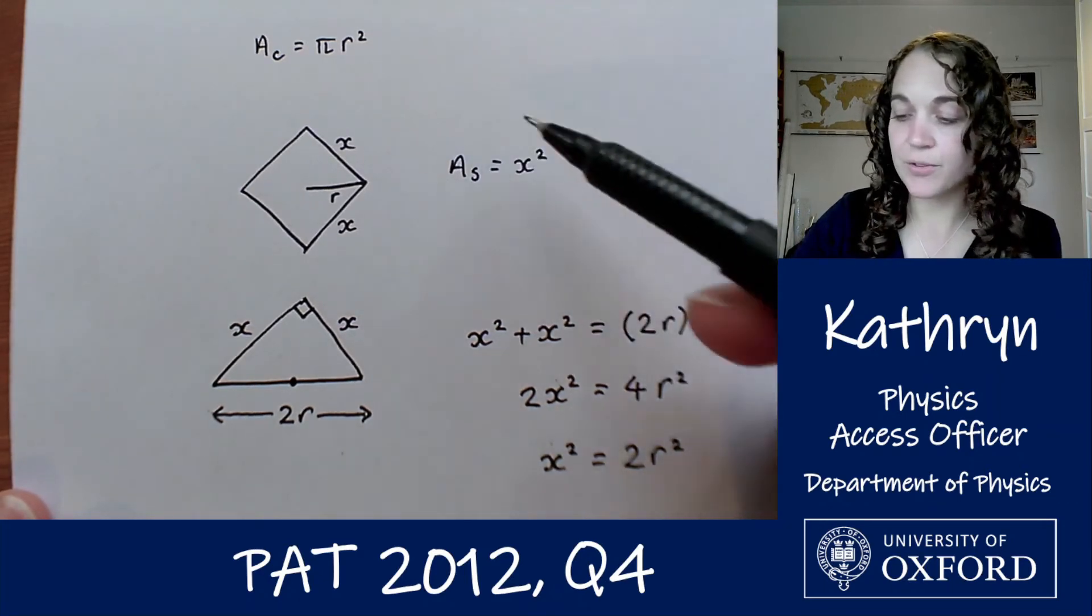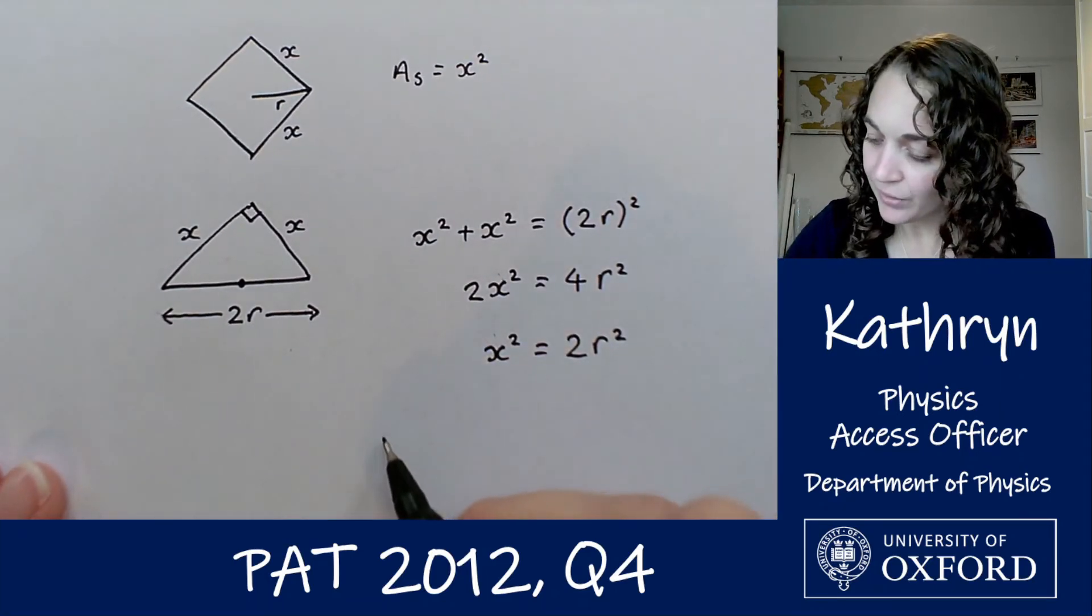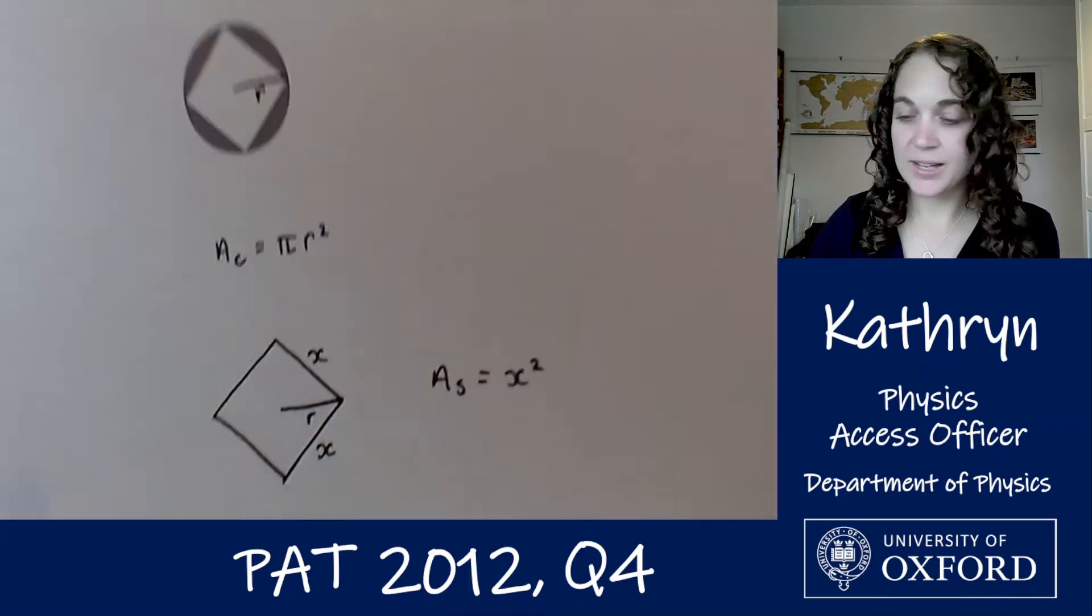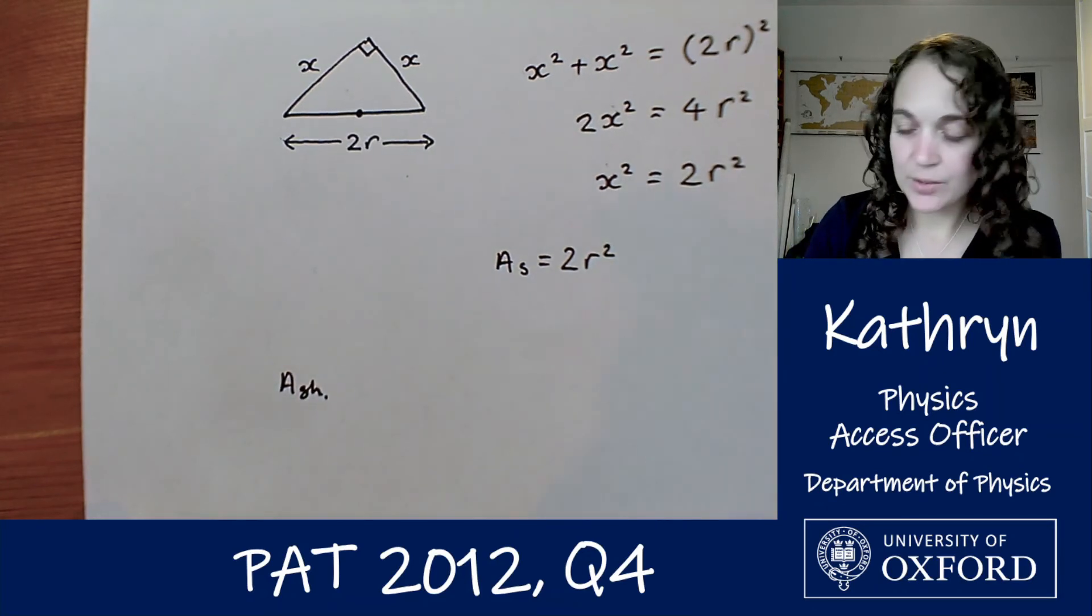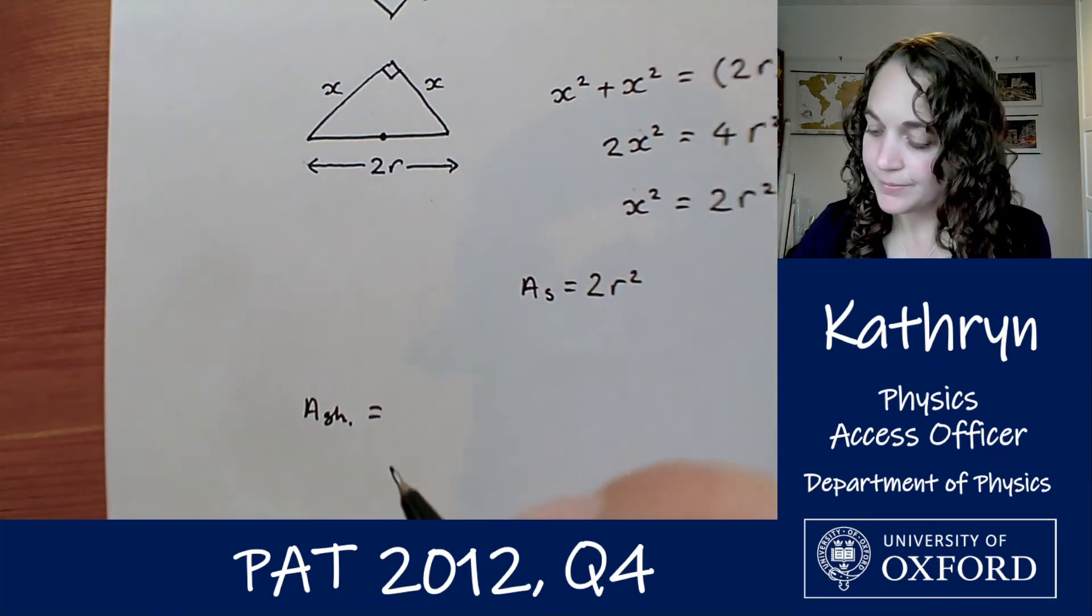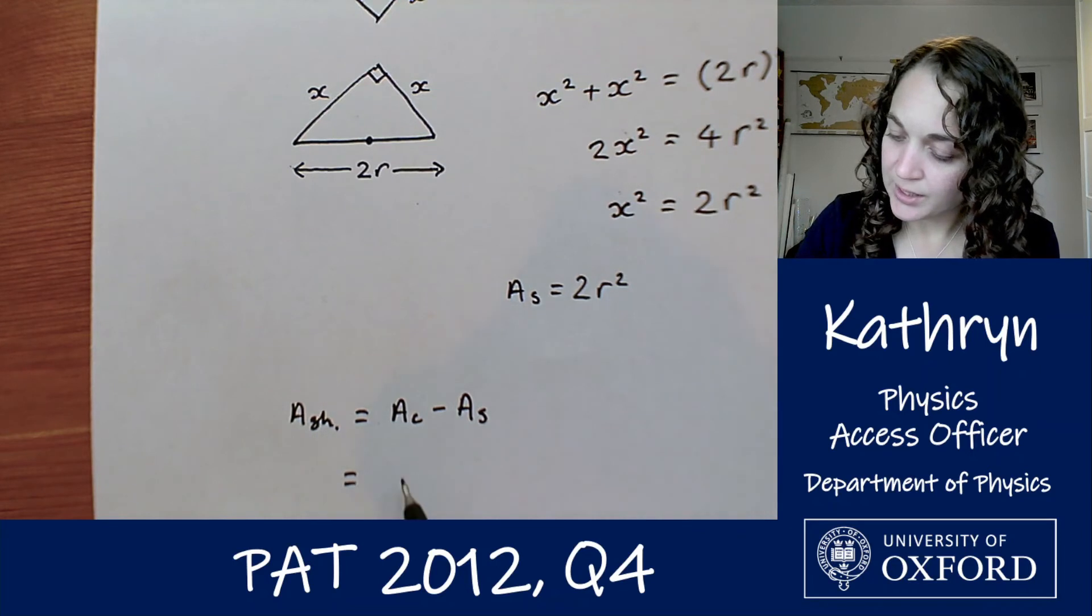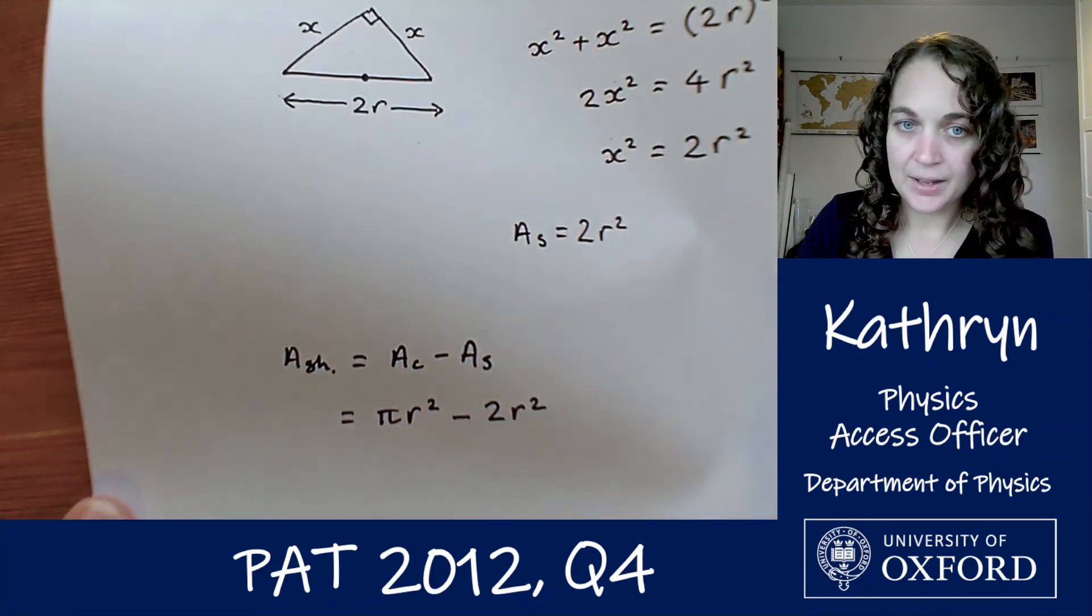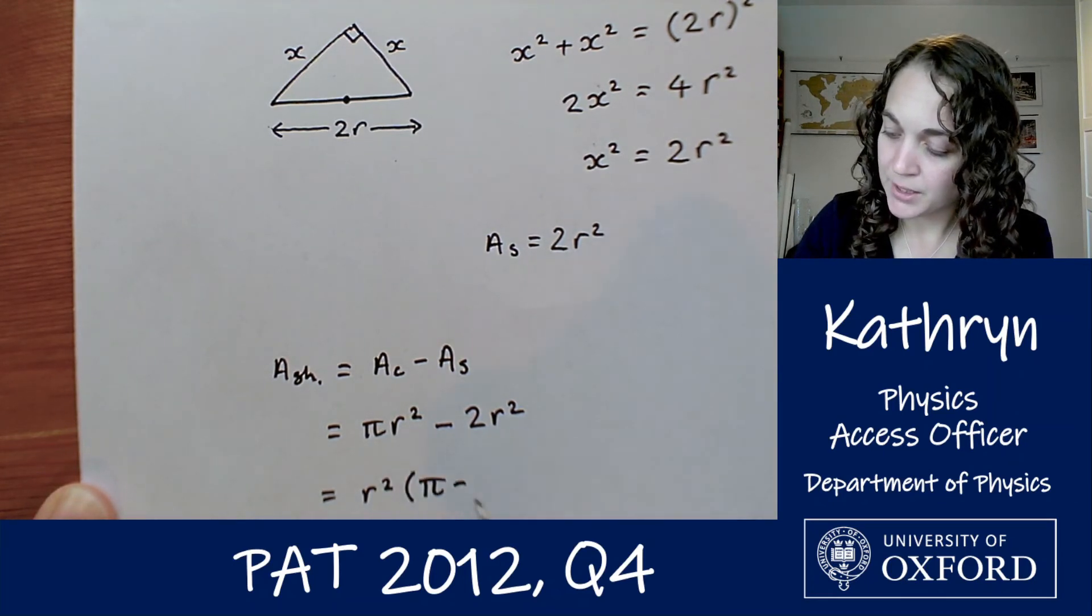And we said already that the area of the square is x squared, so actually we can say that the area of the square is 2r squared. We had the area of the circle as pi r squared, so the shaded area is going to be given by the area of the circle minus the area of the square. So that is circle minus square, which is pi r squared minus 2r squared. Let's just simplify that a little bit, we will have r squared pi minus 2.